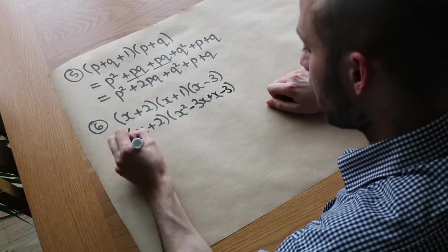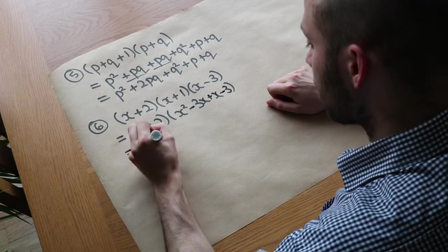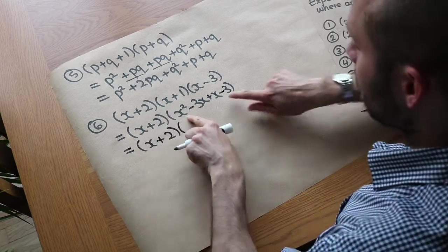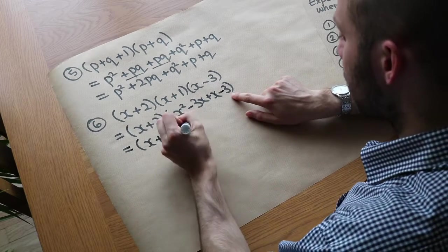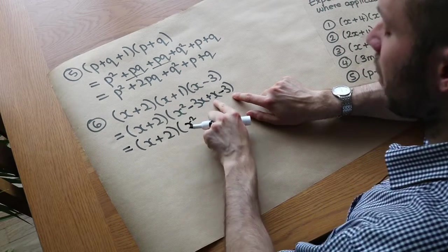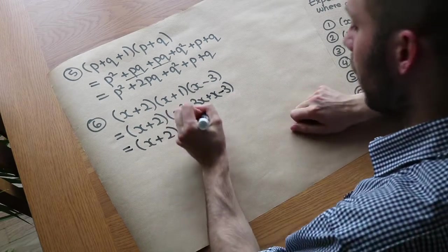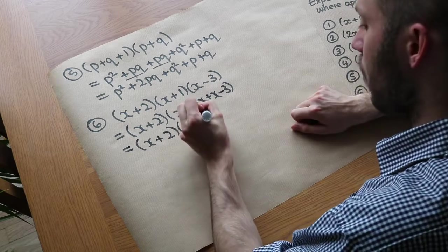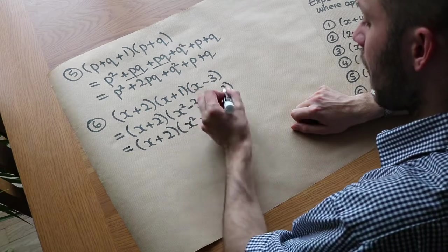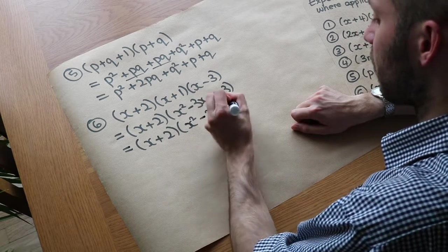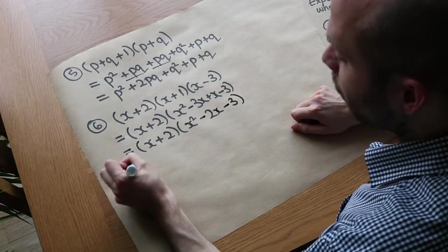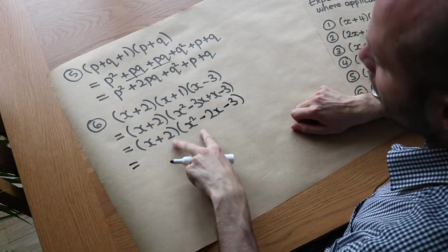I highly advise simplifying this now. We've got x squared. What's minus 3 plus 1? That's minus 2. So we have x squared minus 2x minus 3. Now we've got two brackets, which is more like what we had before.